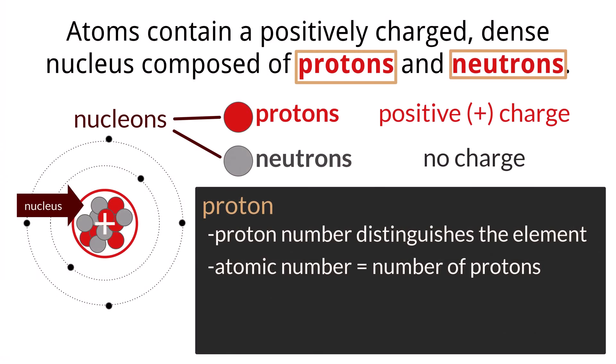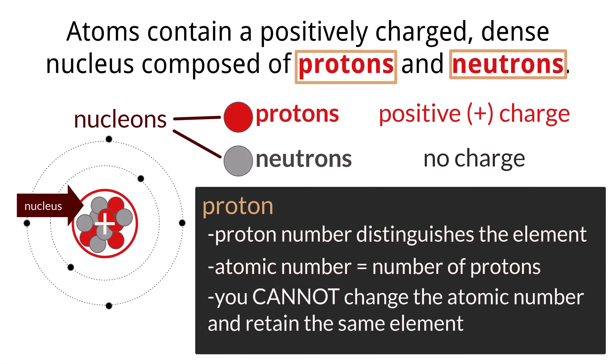This number, unlike other subatomic particles, cannot be changed and have the atom still retain its same properties. If we have a carbon atom with 6 protons and one of those protons gets removed, we don't have a carbon atom anymore. We now have a boron atom because boron has an atomic number of 5.